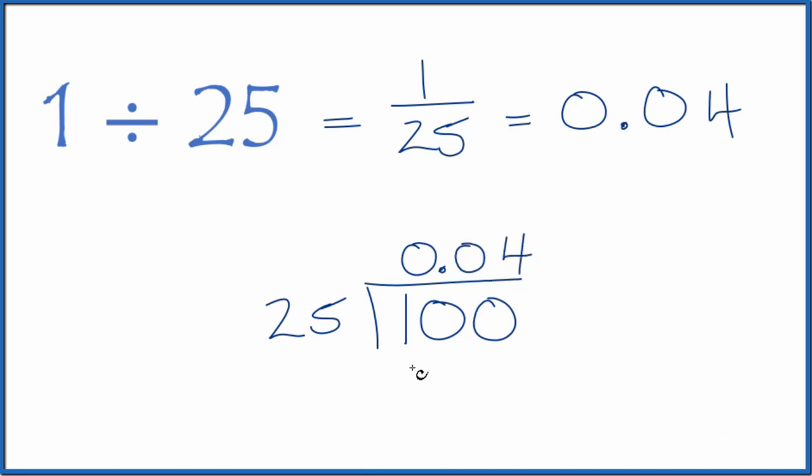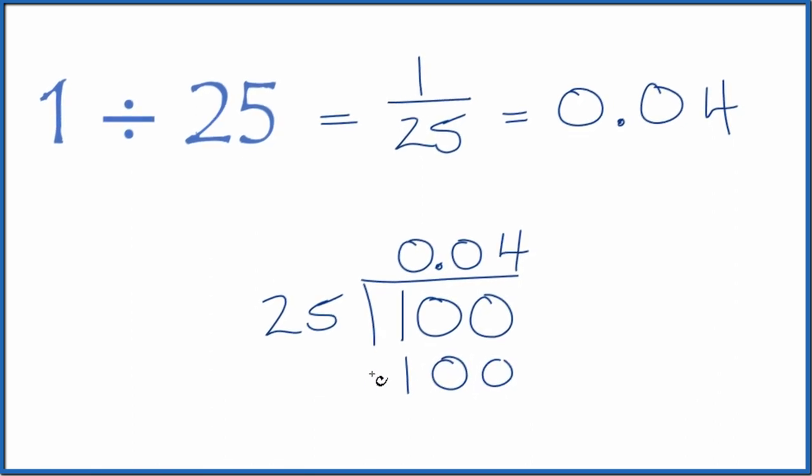Now, 4 times 25, that's 100. We subtract, no remainder. So 1 divided by 25 gives you the decimal, 0.04.